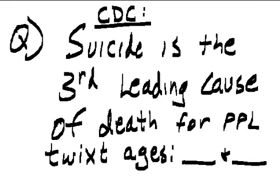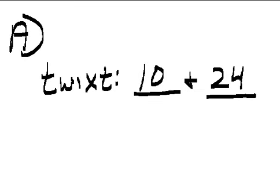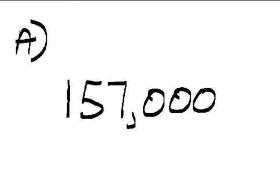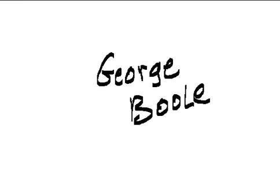From the CDC: Suicide is the third leading cause of death for people between the ages of 10 and 24. Question: Yearly across the USA, approximately how many people ages 10 to 24 are treated at emergency rooms and hospitals for self-inflicted wounds? Answer: Approximately 157,000.